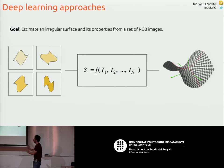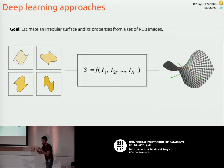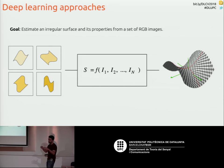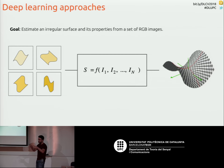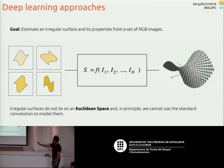The problem is to estimate a function f that maps from a set of images to a surface. The notion of surface is important — a surface is like a plane with non-zero curvature. When we curve a plane there are stretchings and dilations, making the space non-Euclidean. Standard convolutions don't work well in that case, which is why graph convolutions — a generalization of convolutions — work better in these cases.